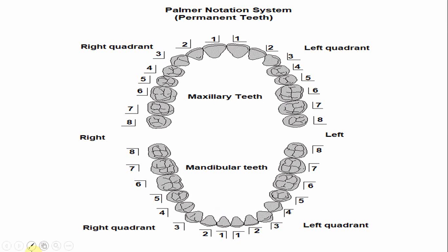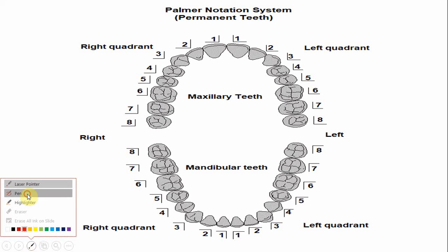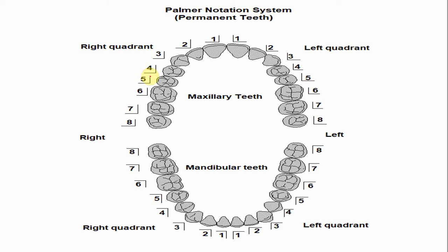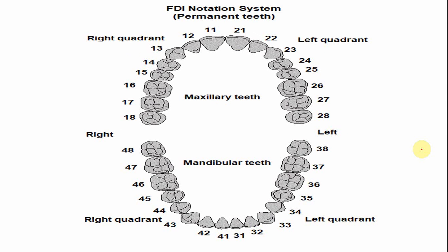In the Palmer Notation System, the number of the maxillary second premolar is five. The numeral five indicates the tooth number, and the bracket shape indicates it is in the upper right maxillary quadrant. The same number five with a mirrored bracket indicates the maxillary quadrant of the left side.